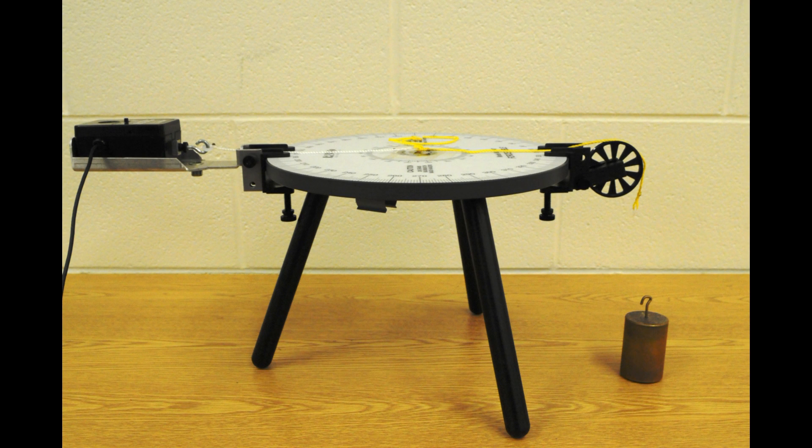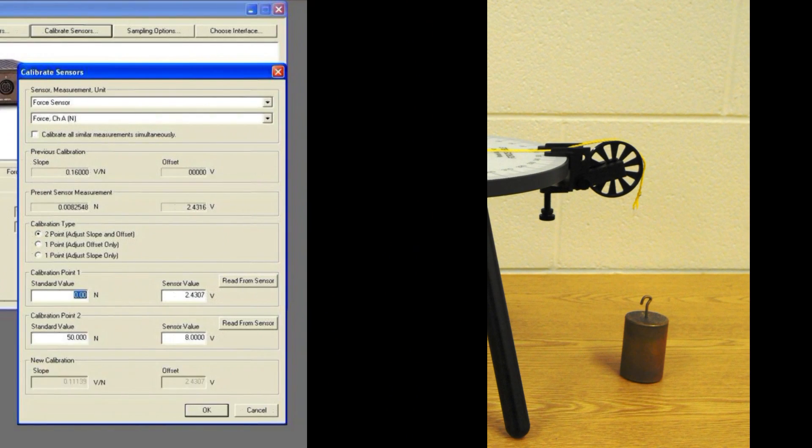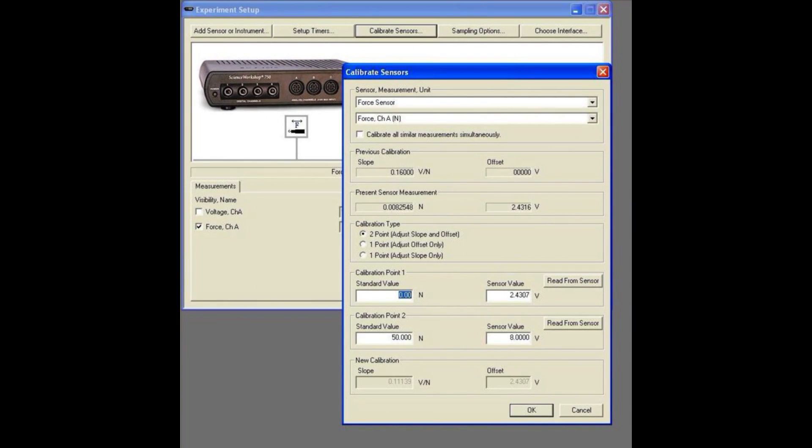We must ask it to sample two forces of known strength, and Data Studio can then interpolate all forces after that. Begin with no tension in the string. Type in 0.0 newtons for the amount of force, and then take a reading.